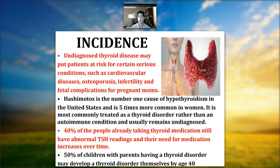Forty percent of people already taking thyroid medication still have abnormal TSH readings, and their need for medication increases over time. TSH is thyroid stimulating hormone produced by the brain. Most people with thyroid conditions are being mismanaged. You may feel great initially on thyroid medication, but long-term it's ineffective because you're not treating the cause — just suppressing symptoms. Fifty percent of children whose parents have a thyroid disorder may develop one themselves by age 40, showing a genetic predisposition.